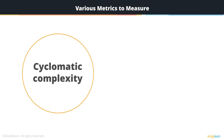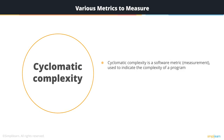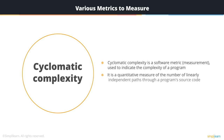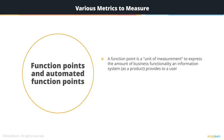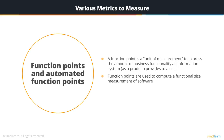Then you have cyclomatic complexity, which is a software metric used to indicate the complexity of a program. It is a quantitative measure of the number of linearly independent paths through a program's source code. You can also have function points and automated function points — function points is a unit of measure to express the amount of business functionality an information system or product provides to a user, used to compute functional size measurement of software and the cost per unit calculated from previous project data.